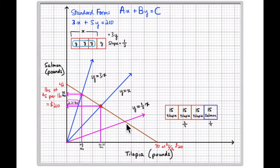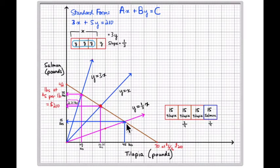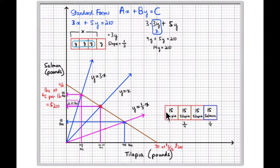From the graph you can see this intersection point is at 45 pounds for tilapia — ten, twenty, thirty, forty, and halfway is 45 pounds — and 15 pounds of salmon, which is ten and then halfway to 15. So 45 pounds of tilapia and 15 pounds of salmon. The total purchase is 60 pounds: one-fourth is salmon at 15 pounds, three-fourths is tilapia at 45 pounds.